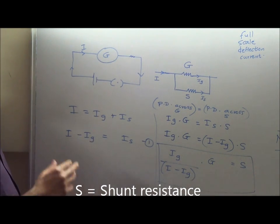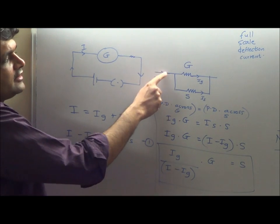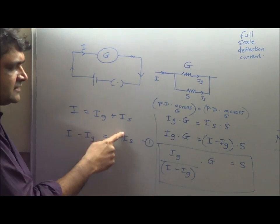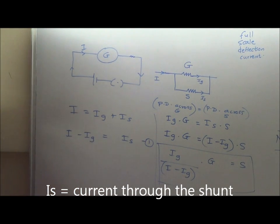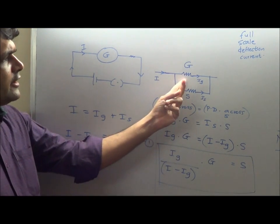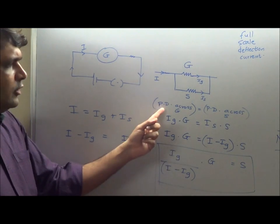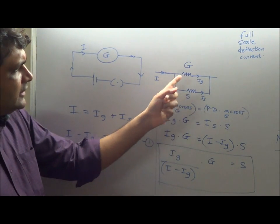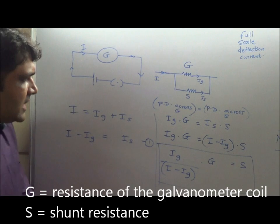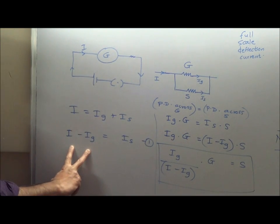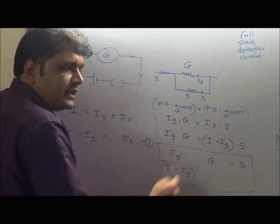How can I measure I? By Kirchhoff's current law at the junction: current in equals current out, so I = I_G + I_S, which gives I_S = I − I_G. Since the shunt and galvanometer coil are in parallel, the potential difference across G equals the potential difference across the shunt: I_G × G = I_S × S. Substituting I_S = I − I_G and solving for S gives: S = (I_G × G) / (I − I_G).